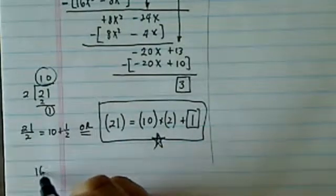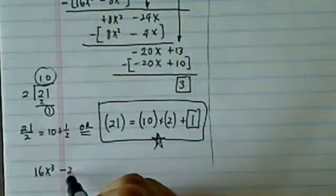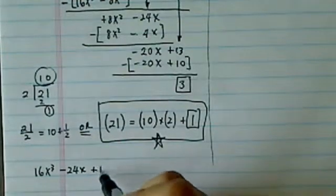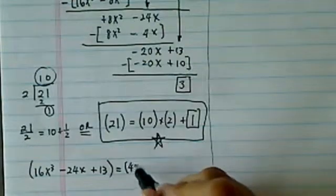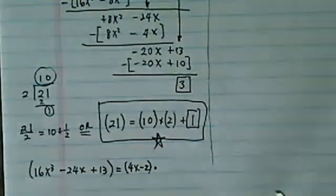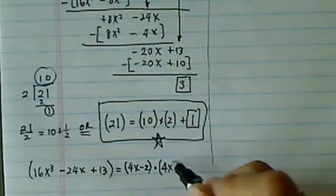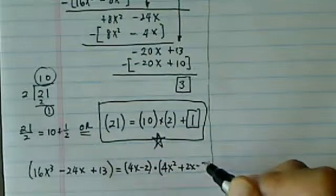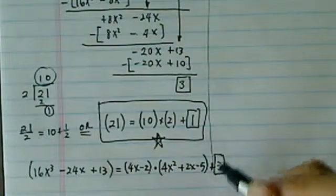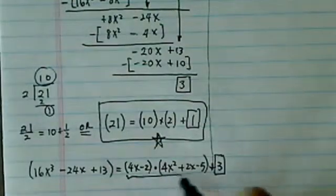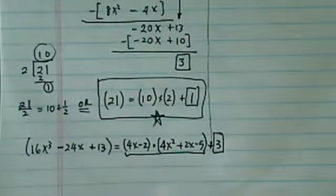So what we're really saying is that big long thing you're trying to do division on plus 13 is really equal to 4x minus 2 times whatever the quotient you have, which is 4x squared plus 2x minus 5, and add the remainder, which is the 3. We'll put a box over here—that's our final answer.